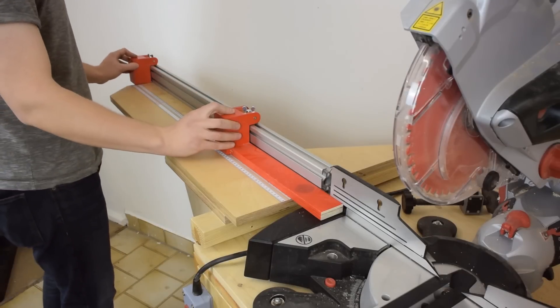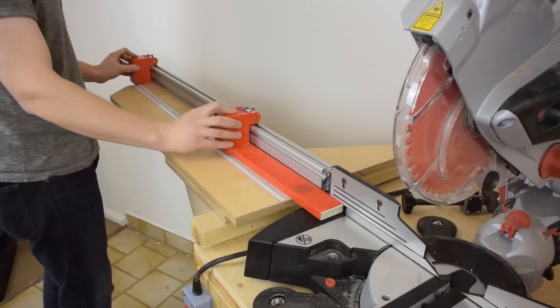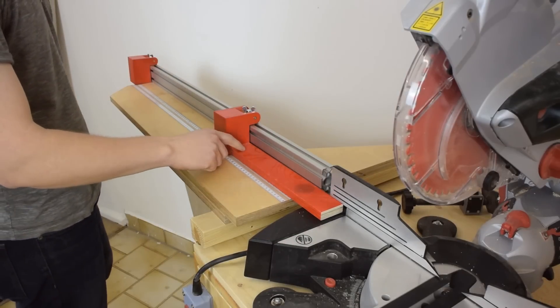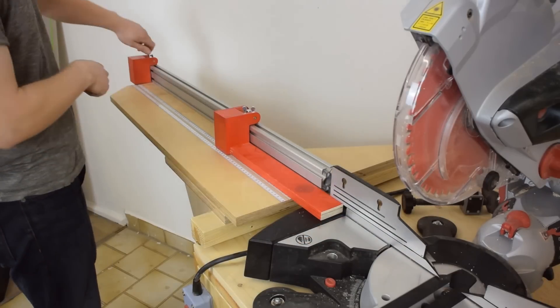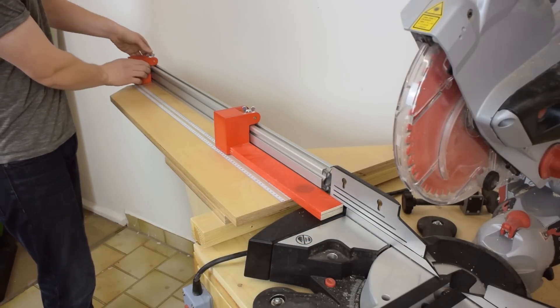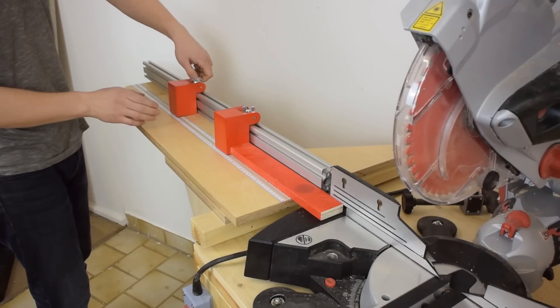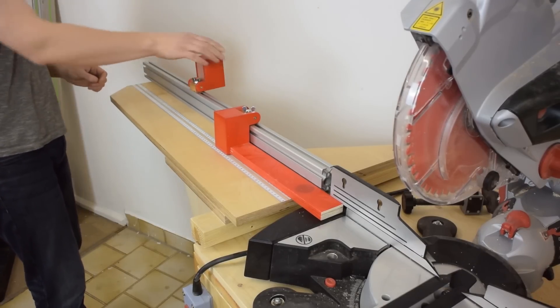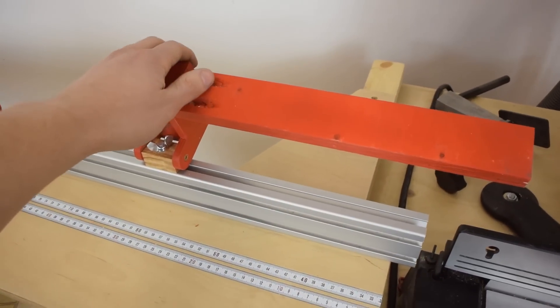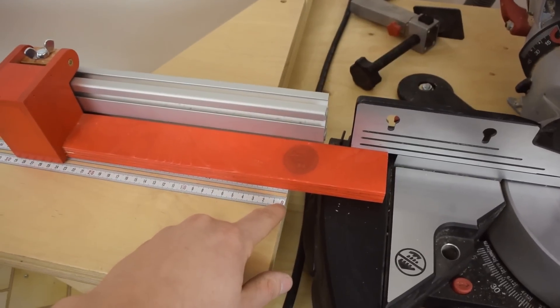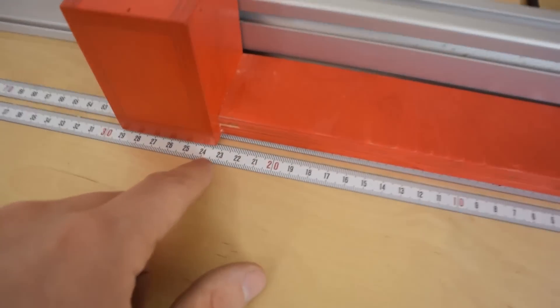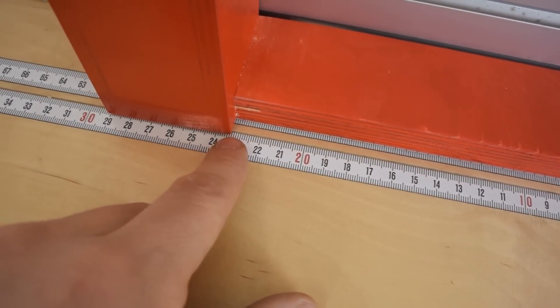I use this homemade dual flip-up stop block system. This stop block has an extension so it can reach right up to the saw blade, and this one's just a normal regular stop block. When I'm cutting shorter pieces I use this stop block and this scale which has zero right here, and I'm reading my value right at this corner here.